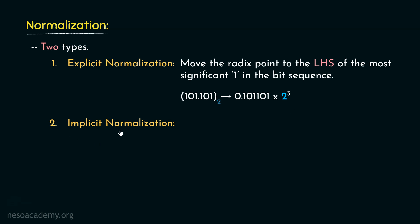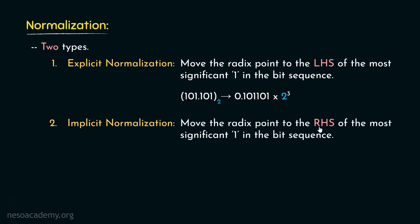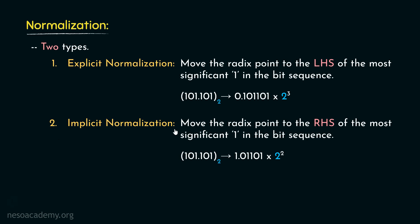Coming to the second type — implicit normalization — here we are supposed to move the radix point to the right hand side of the most significant 1 in the bit sequence. So this particular value, if represented using implicit normalization, the mantissa will have the most significant 1 with the radix point to its right. In doing so, we moved the radix point two bits towards the left, and that is why the power of 2 will be set as 2. Although we have two types, implicit normalization is the better one with respect to precision — we will learn why in the next session.